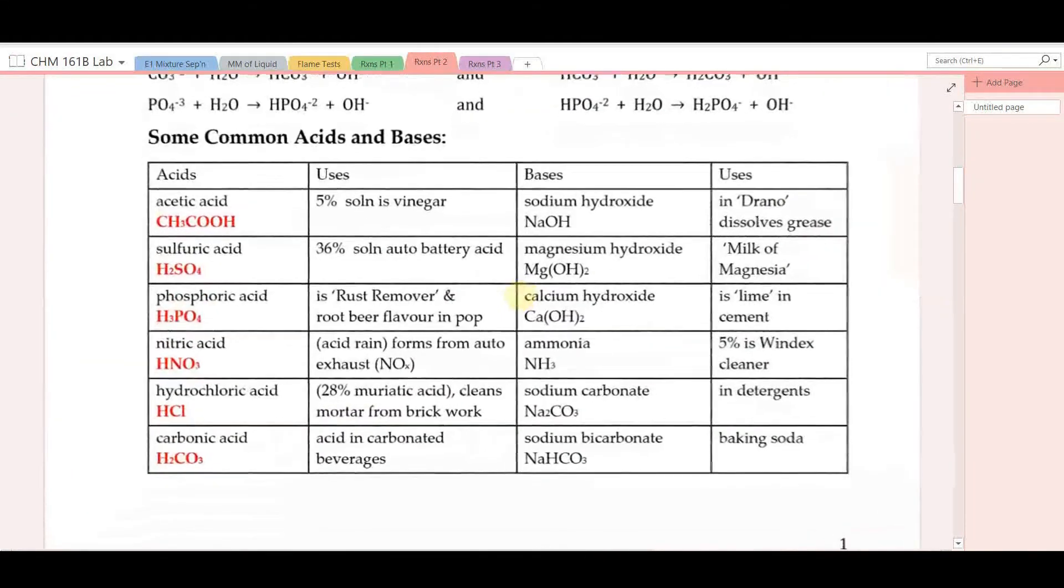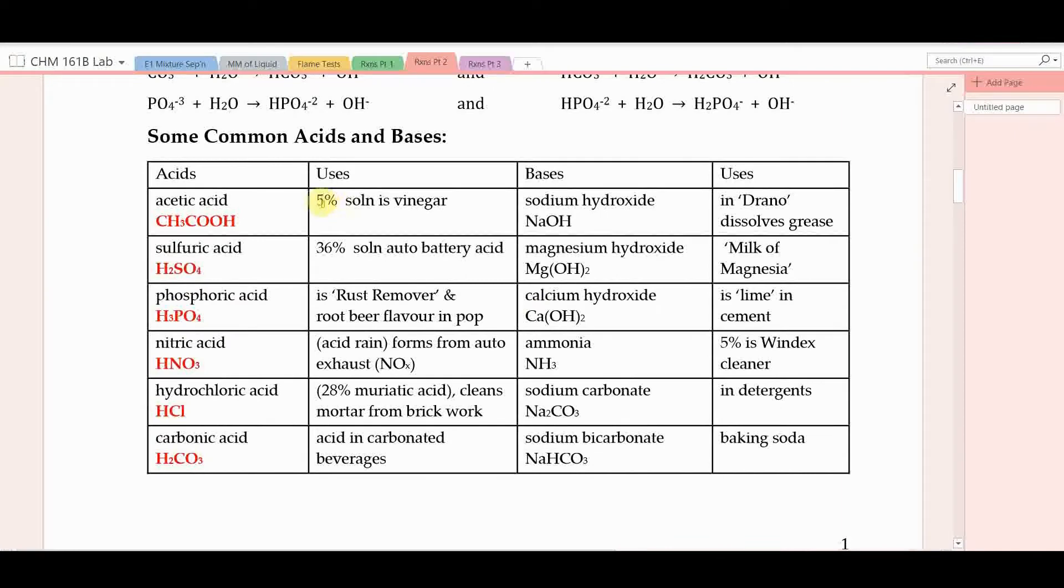Let's take a look at some common acids and bases. Acetic acid. A 5% solution of this acid is known as vinegar. Sulfuric acid is battery acid in your car, specifically at 36% when the battery is fully charged. Phosphoric acid is something you can buy at the local auto shop. It's a rust remover for cleaning rust from your car. Also in small quantities is added as a root beer flavor in pop. Nitric acid is a fairly corrosive acid. It's the main ingredient of acid rain. It forms from auto exhaust, typically nitrogen oxygen compounds of varying ratios called NOx that form in the internal combustion engine in small quantities.